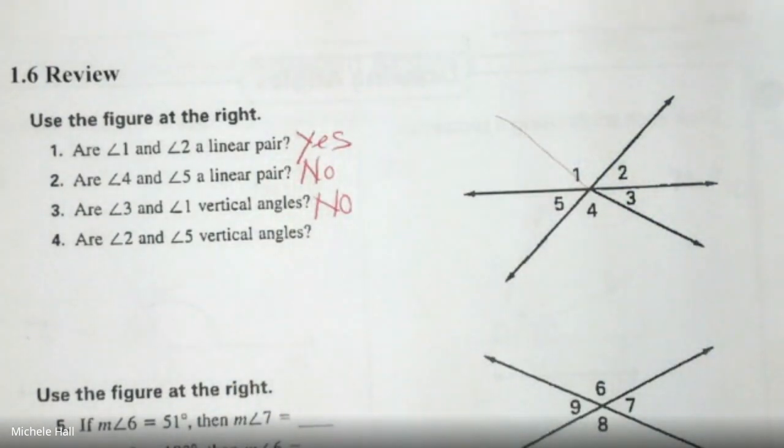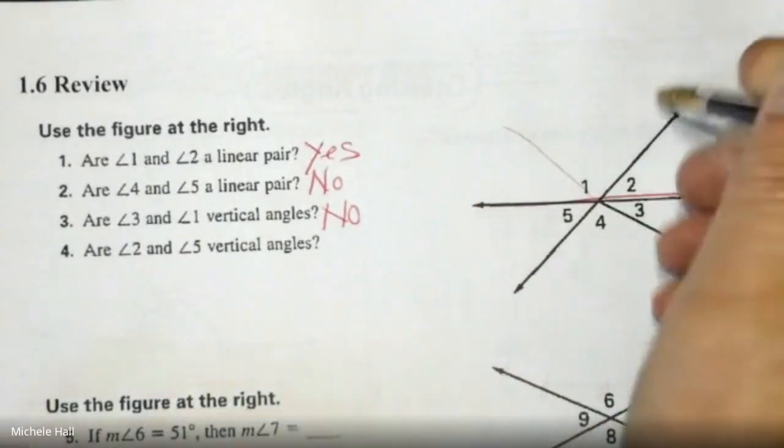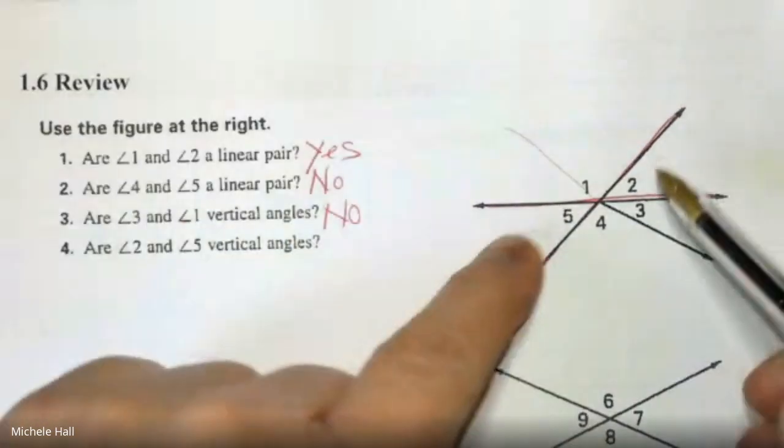Are Angle 2 and 5 vertical? Yes, because I can literally take my pen and draw around those two lines and I can see they are across from each other.